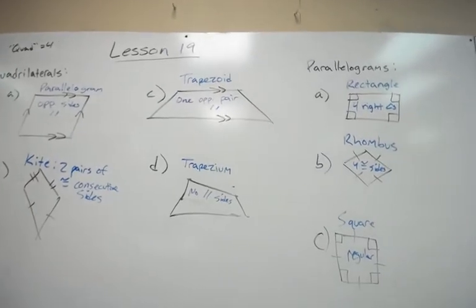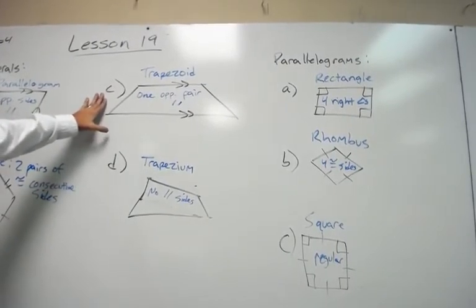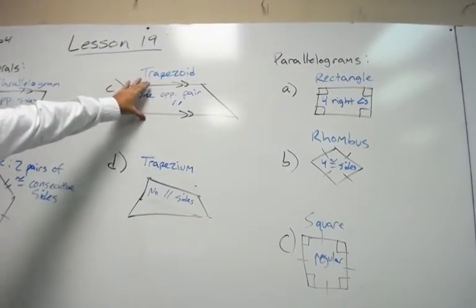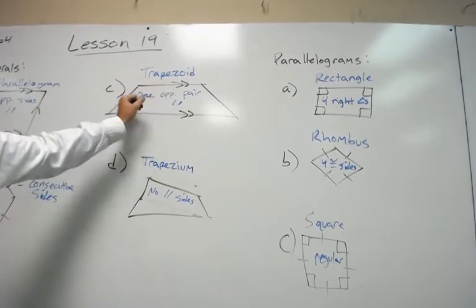The next quadrilateral we have is a trapezoid. So, trapezoid property is that it only has one pair of opposite parallel sides. So these opposite sides are parallel, these are not.